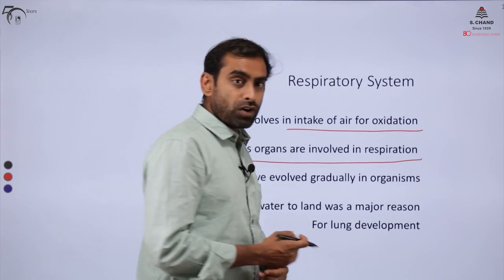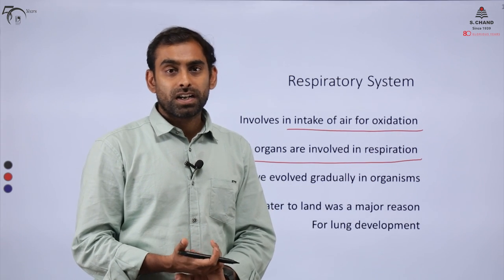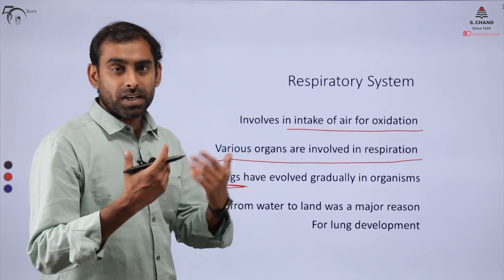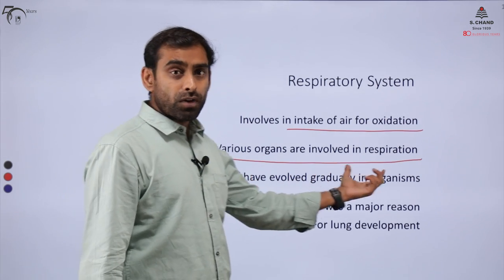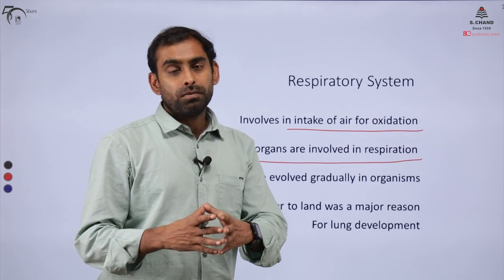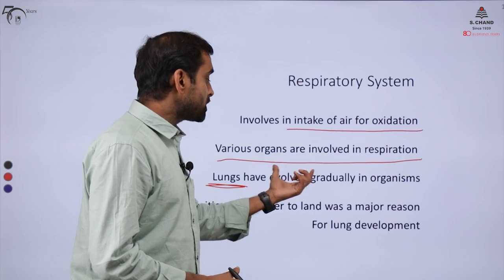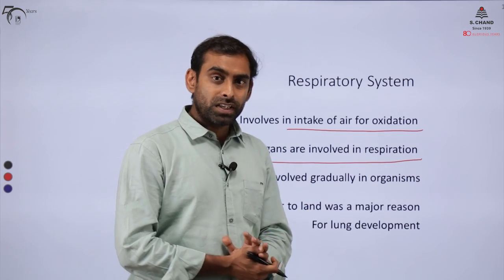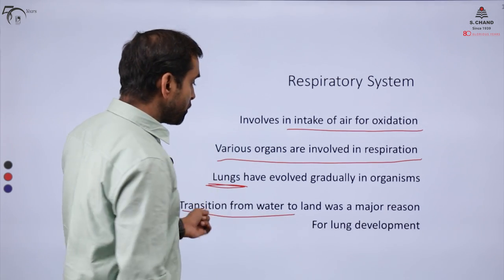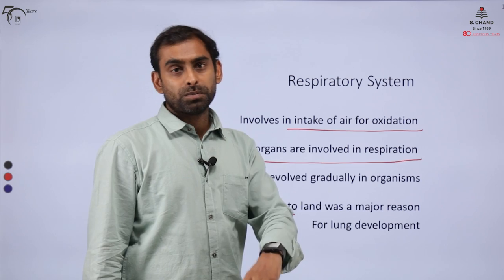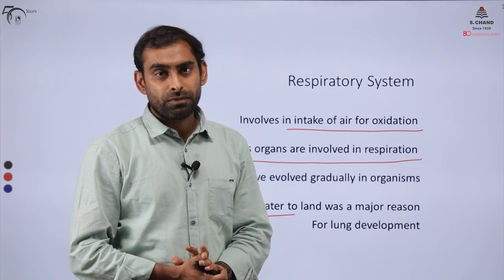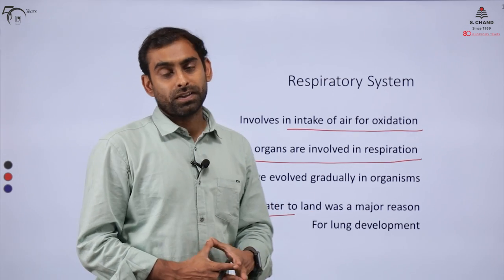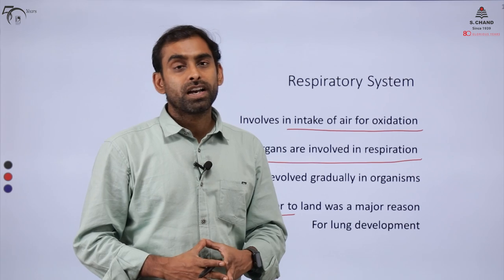There are many organs involved in respiration. We will see that in different types and phylogenetic groups, which organs help in respiration. Particularly, lungs gradually evolved from gills. If you recall the description of Pisces or fish and their gills — lungs developed from gills. We will talk about how lungs emerged and how they developed from gills. The transition from water to land, from aquatic and marine life forms to terrestrial life forms, was one of the major driving forces that led to the development of lungs.